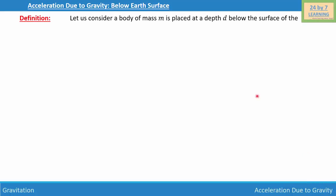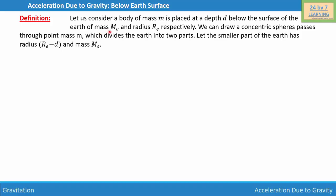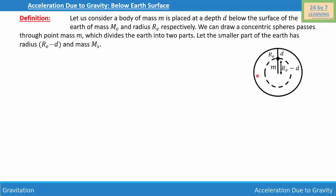Let us consider a body of mass m placed at a depth d below the surface of the earth, which has mass m_e and radius r_e. We draw a concentric sphere passing through the point mass m, dividing the earth into two parts. The smaller part has radius r_e minus d. The distance of the point mass from the center of the earth is therefore r_e minus d.